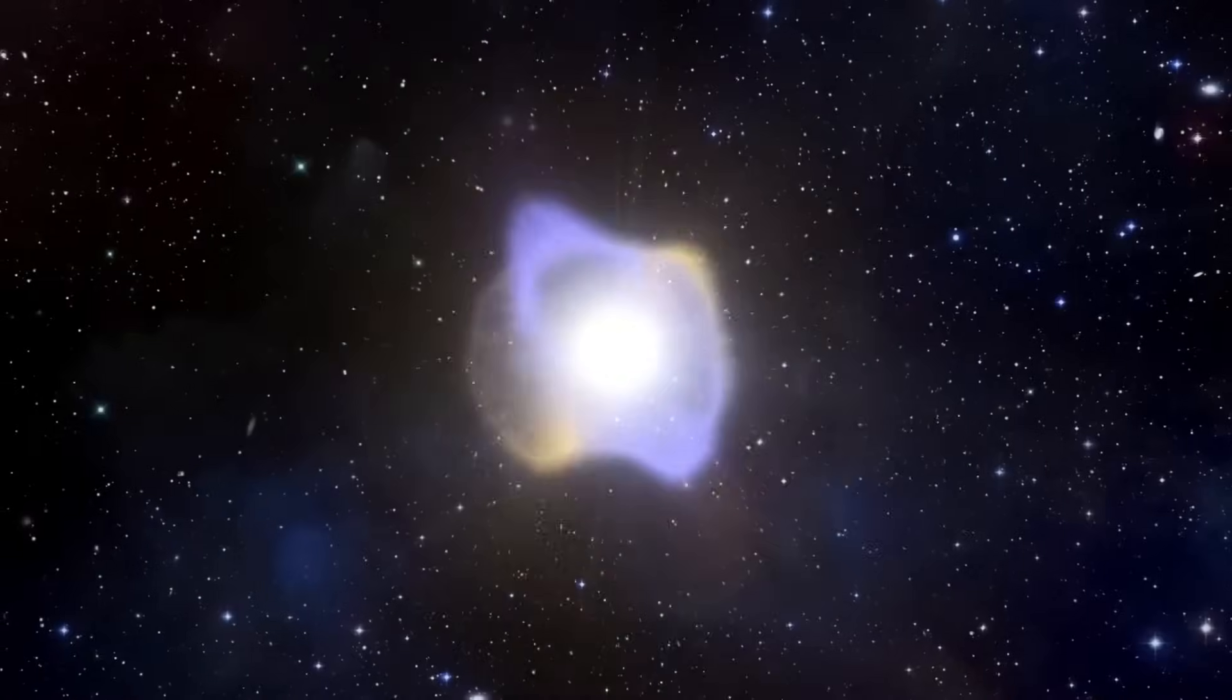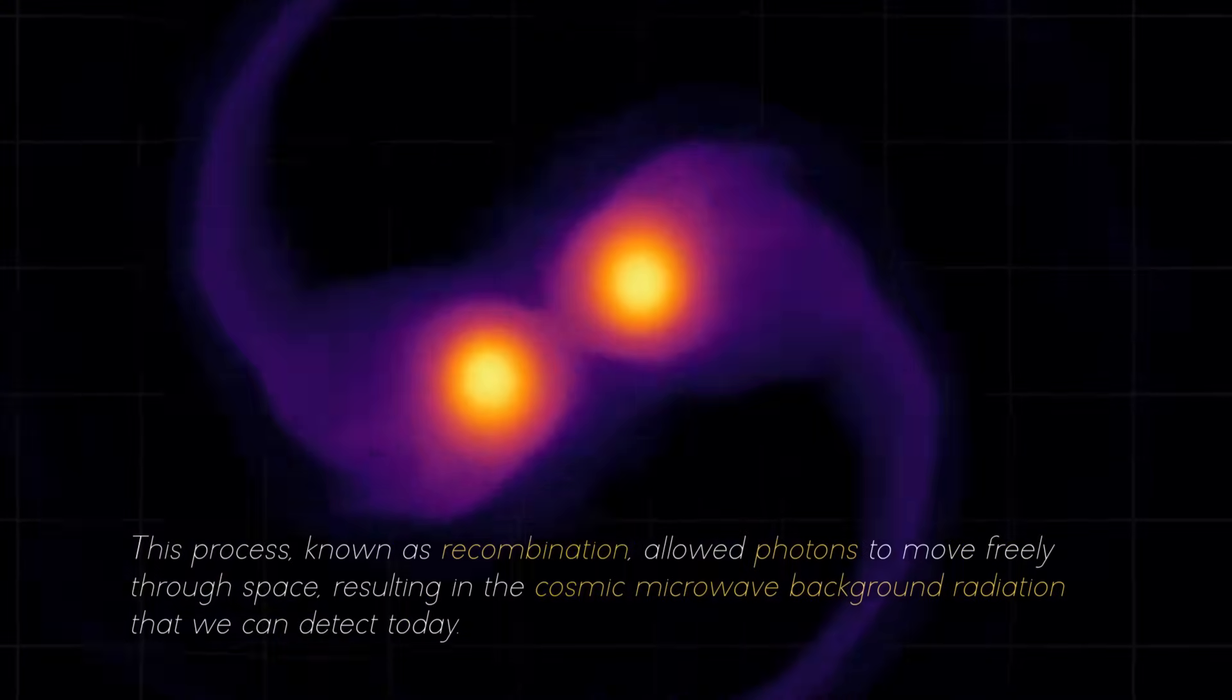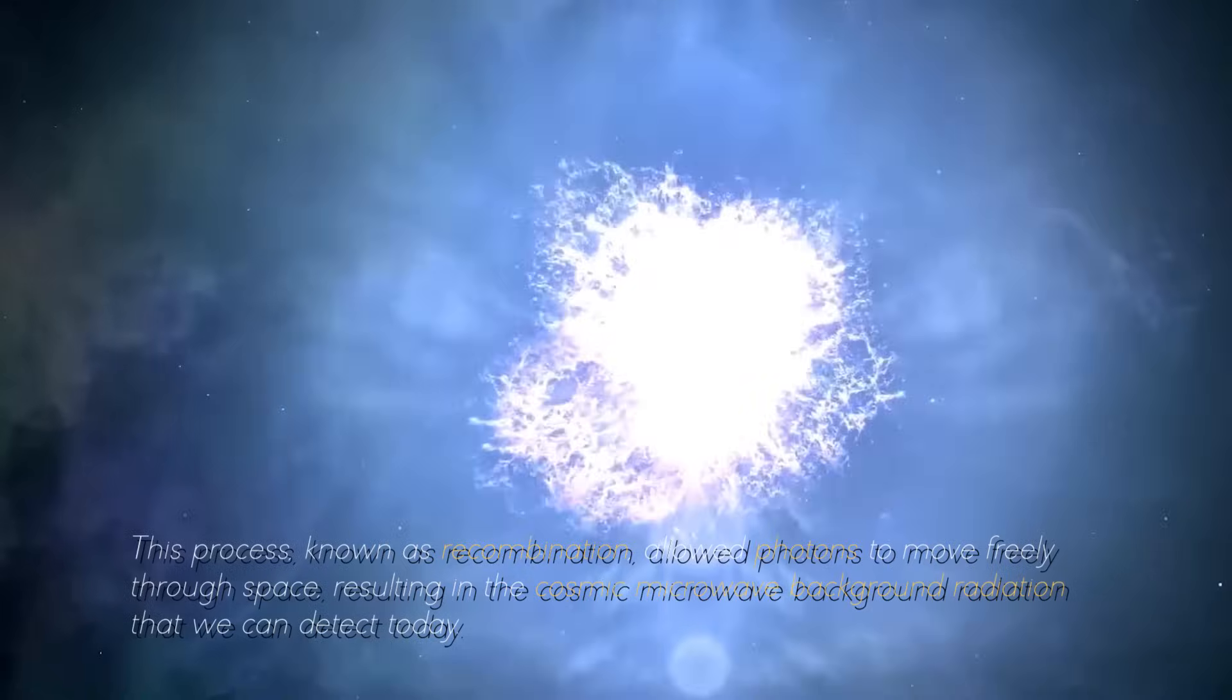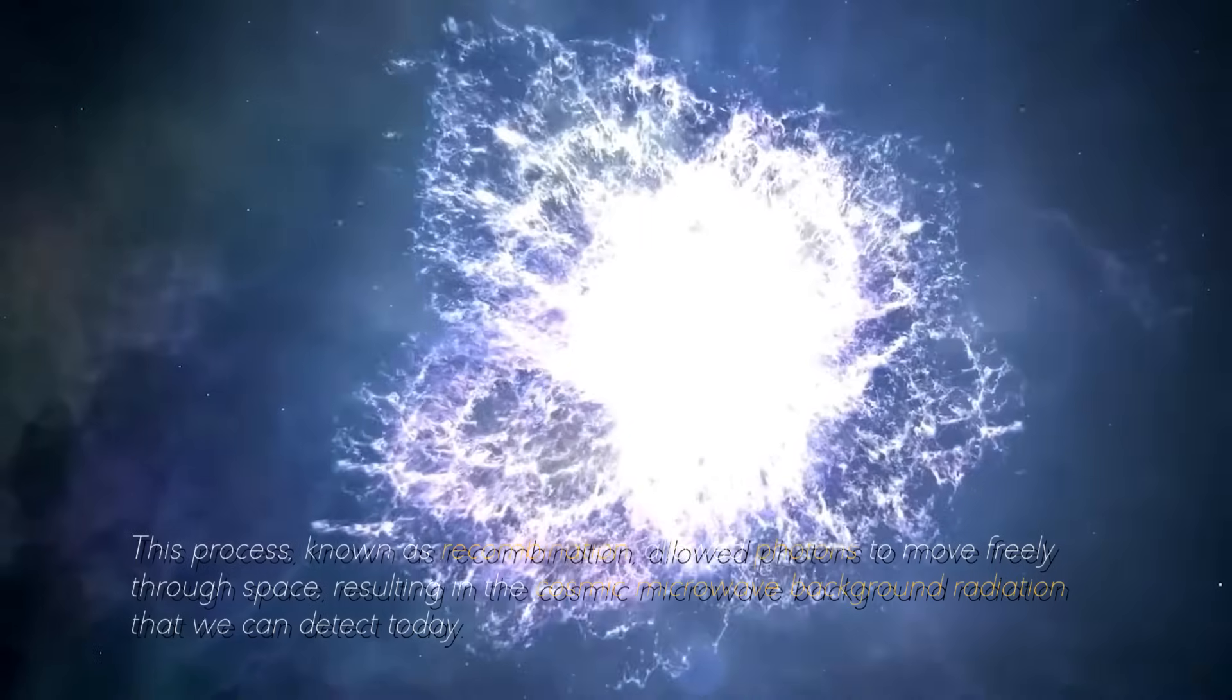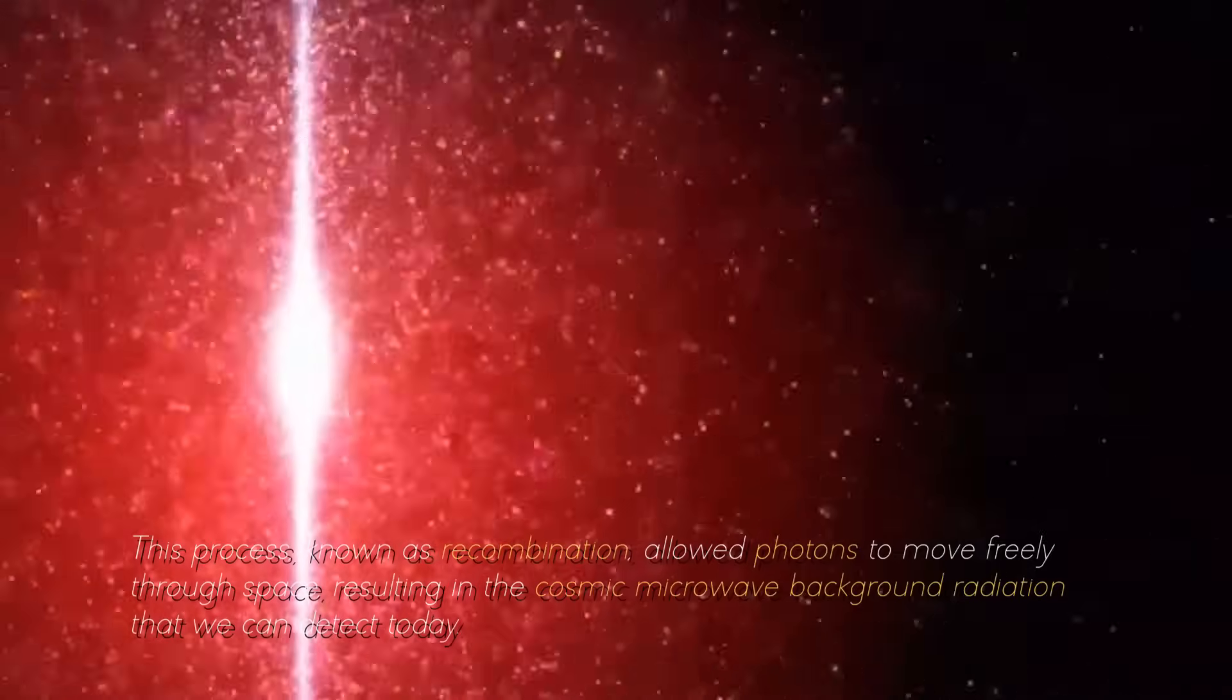As the universe cooled due to its expansion, the temperature dropped enough to allow electrons to bond with protons and form neutral atoms. This process, known as recombination, allowed photons to move freely through space, resulting in the cosmic microwave background radiation that we can detect today.